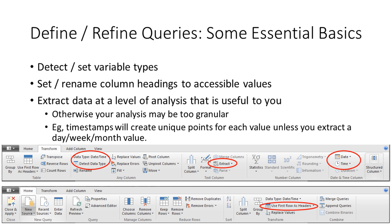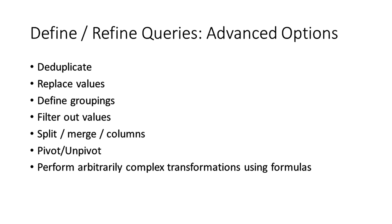There's much more you can do in the Query Editor. You can deduplicate values, replace values, define groups — particularly useful for consolidating inconsistently entered data like combining all the yes/no variants into two distinct categories. You can filter out values you don't want, split and merge columns, or split a date column into separate year, month, and day columns. You can pivot and unpivot data, and perform arbitrarily complex transformations including advanced math on every single row — written once and applied automatically across the entire dataset.